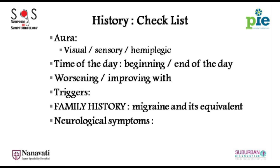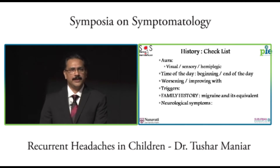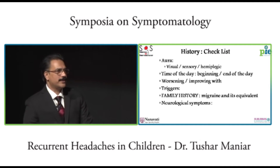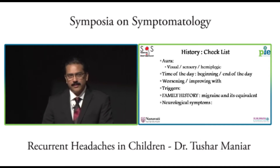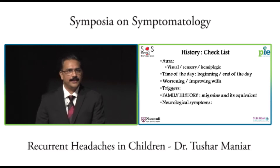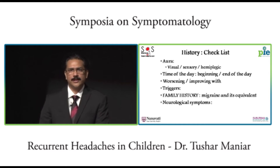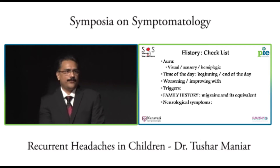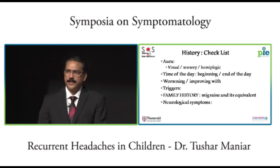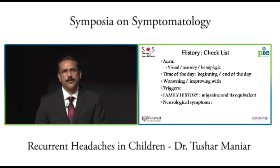There is no complete migraine history without asking about aura. In bigger children or adolescents, almost 50 to 70% have aura. The commonest aura in children is visual aura — they see flashes of light, diffuse and not localized to one place. Sensory aura in the form of numbness or feeling of something crawling over the body, which are more common in adults, are not so well perceived in pediatrics.